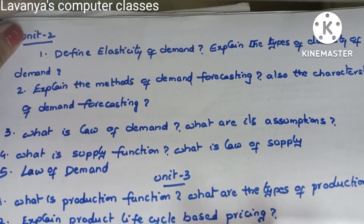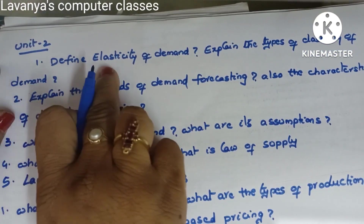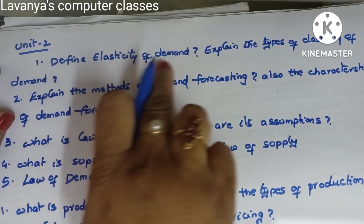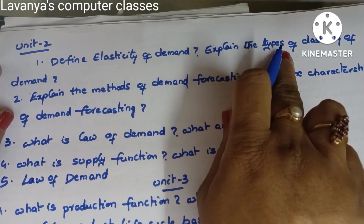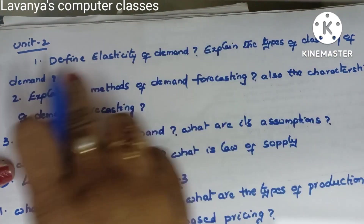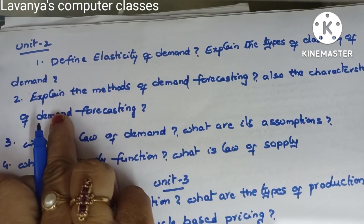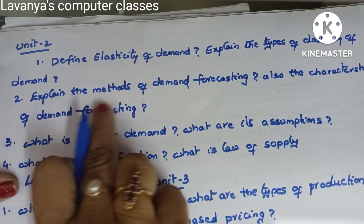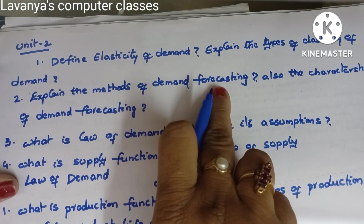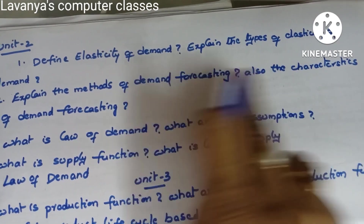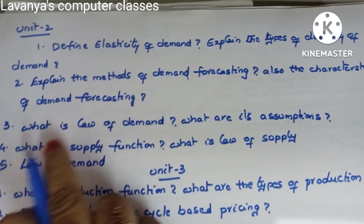Unit two important questions: first, define elasticity of demand and explain the types of elasticity of demand. Second: explain the methods of demand forecasting, including the characteristics of demand forecasting.